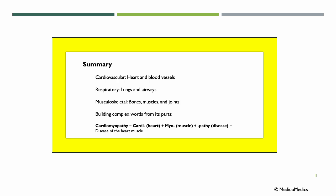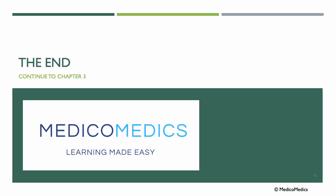In summary: we covered the cardiovascular system — the heart and blood vessels; the respiratory system — lungs and airways; and the musculoskeletal system — bones, muscles, and joints. We also went into more detail about how we can build complex words from their subparts — for example, CARDIOMYOPATHY, consisting of CARDI, MYO, and PATHY, meaning disease of the heart muscle. That's the end of this lecture. Thank you for listening. Continue now to Chapter 3.